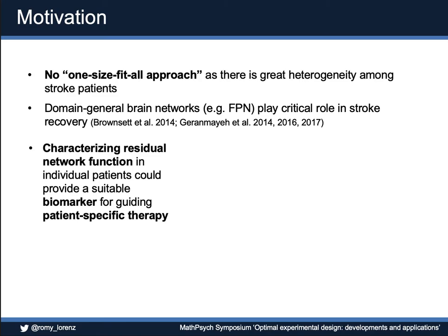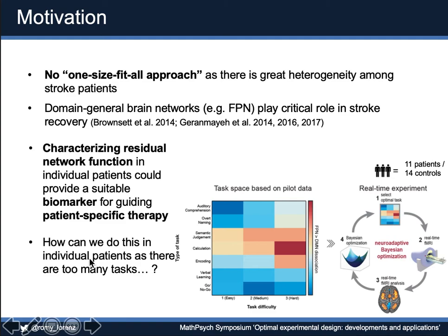But how would we do this? There are so many tasks involved. We thought neuroadaptive Bayesian optimization could be a great fit to address such a research question. In this case, we chose a task space based on pilot data: we selected seven cognitive and linguistic tasks with three difficulty levels, and then we searched through this task space in 11 patients and 14 controls.